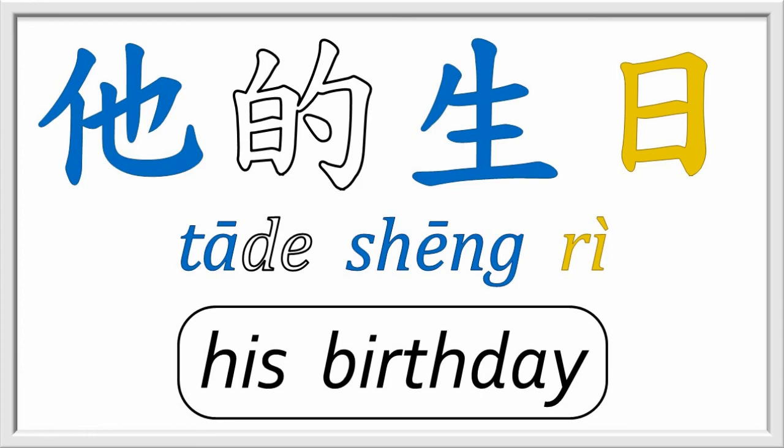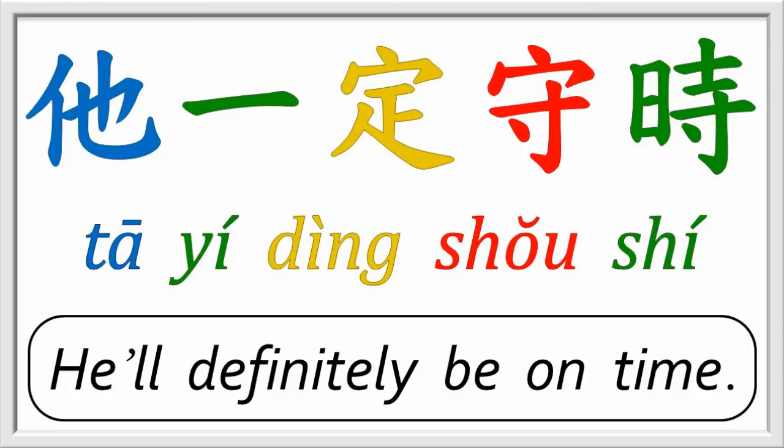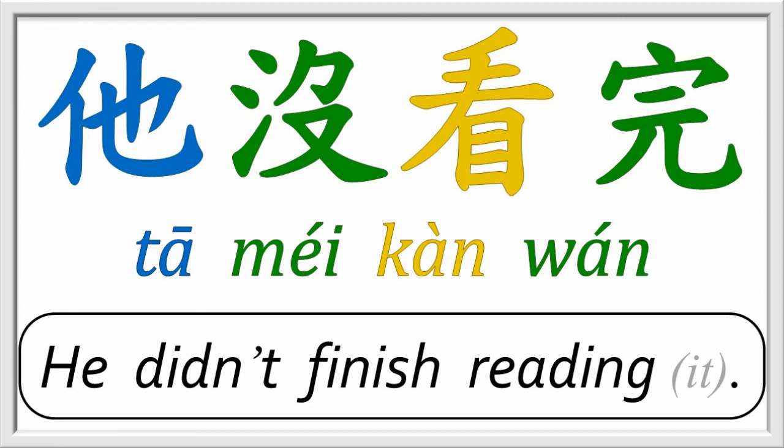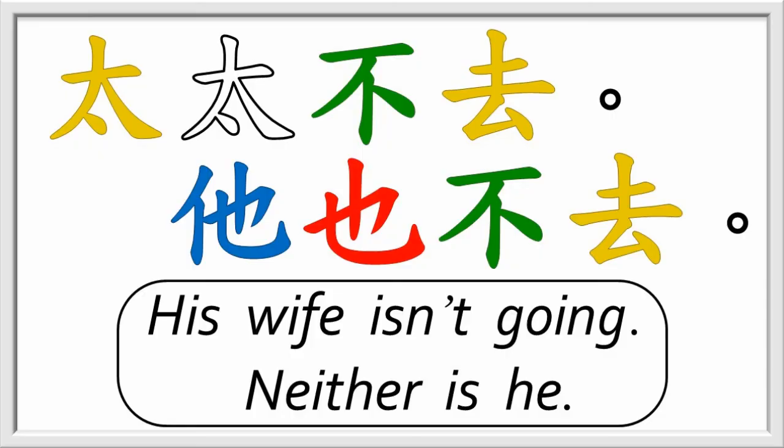Now, however, modern Mandarin reserves tā for people for masculine gender — he and him. I'll introduce she and her in our next lesson. Some examples of tā for he and him include its use with the particle de to show possession: tā de shēngrì — his birthday. An example with he: tā yīdìng shòushí — he will definitely be on time. With a negative méi referring to a past action: tā méi kàn wán — he didn't finish reading it. And with today's first character yě and negative bù, we have 'also not' or 'neither': tàitai bù qù, tā yě bù qù — his wife isn't going, and neither is he.